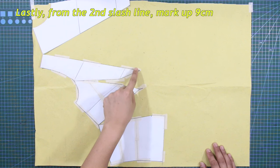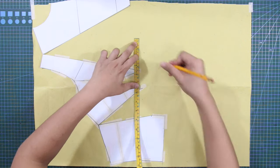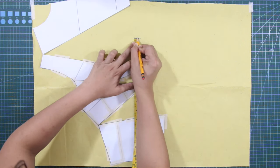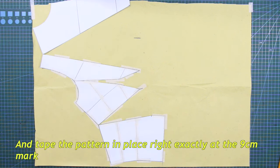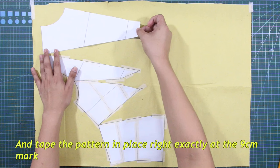And lastly, from the second slash line, mark up 9 cm and tape the pattern right exactly at the 9 cm mark.